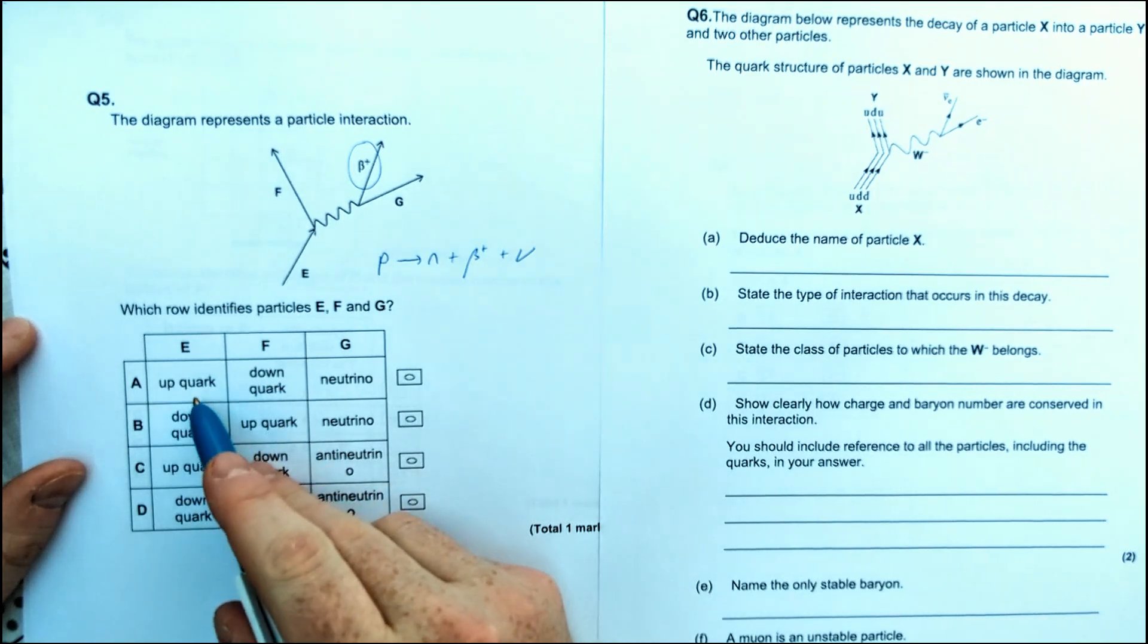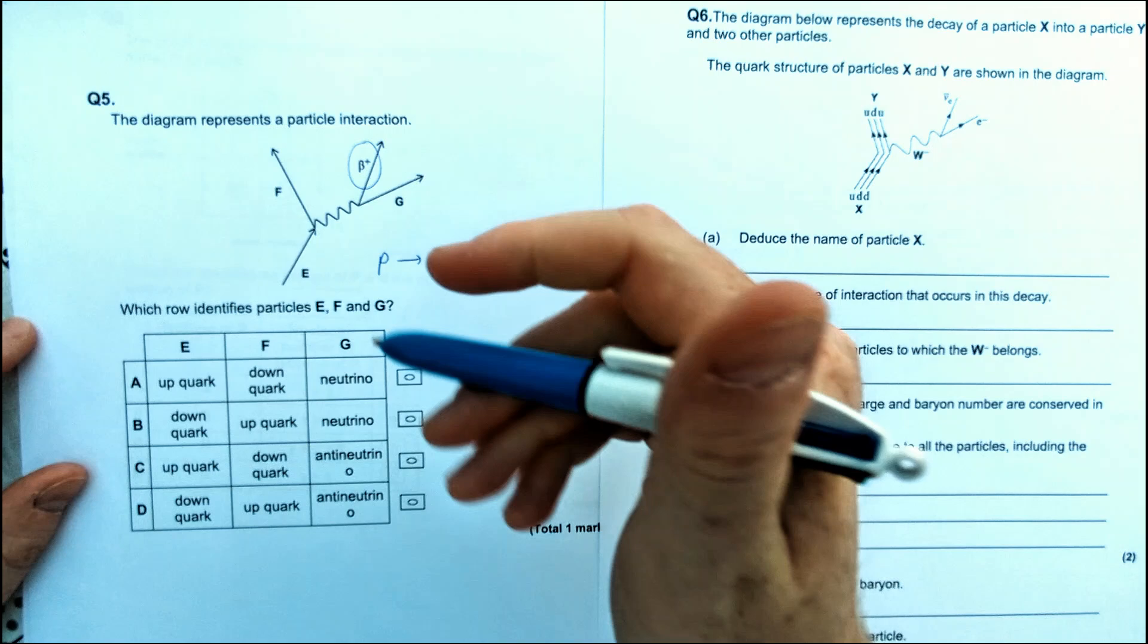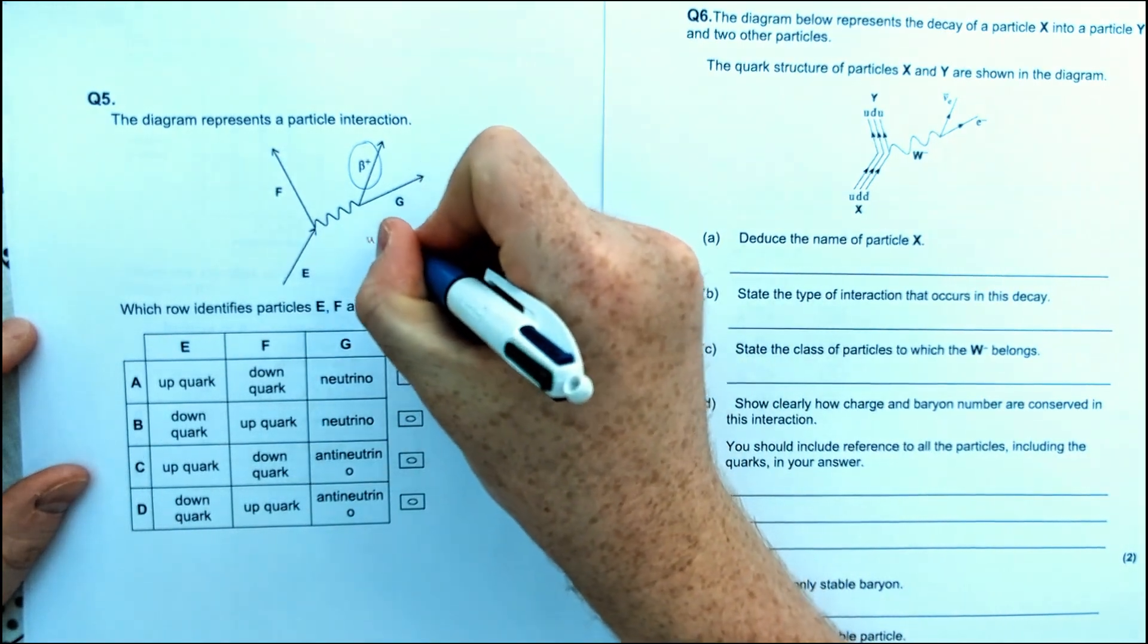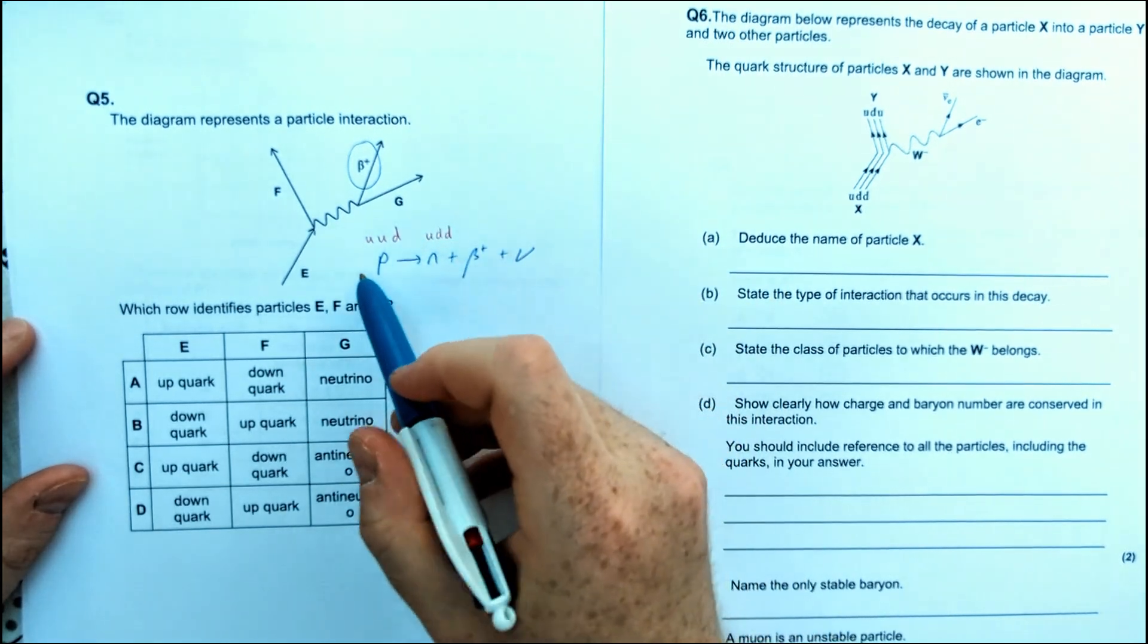So let's just see which row of these matches up. And now we've got quarks here, which means there's actually a layer to this question. We do need to know what quarks are in a proton. We've got up, up, and down, and a neutron is up, down, and down.